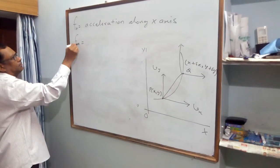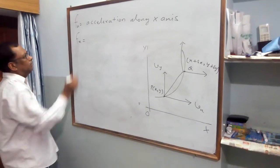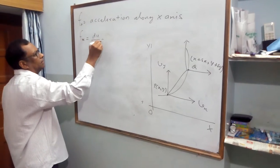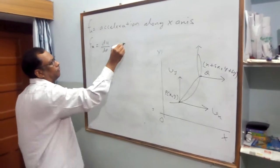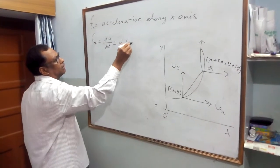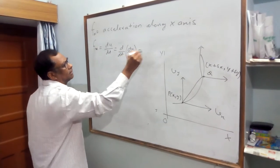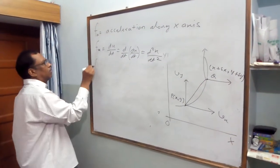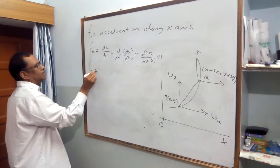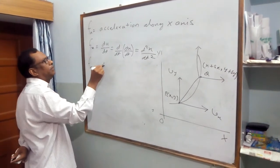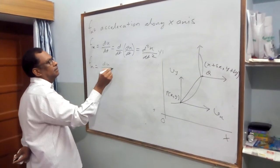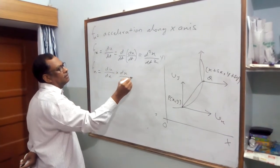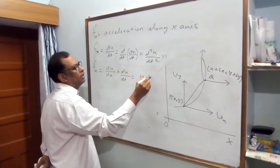Fx is defined as du/dt, that is d/dt of dx/dt, which equals d²x/dt². Alternatively, Fx equals du/dx times dx/dt, that is, u du/dx.